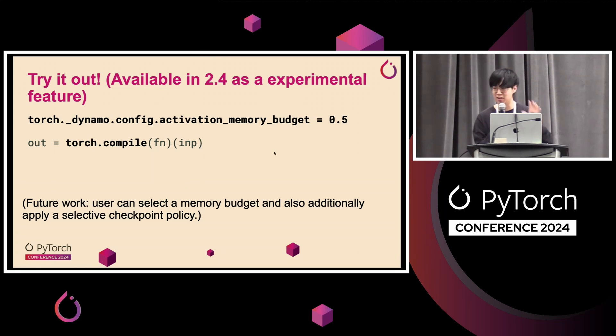And so this is currently a very experimental feature. It's kind of gated behind a flag. So you can set your activation memory budget and try to automatically save memory through the compiler. And in the future work, we're kind of working on a more cohesive API for users to select it.